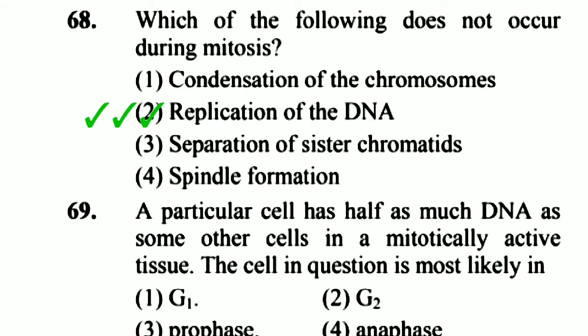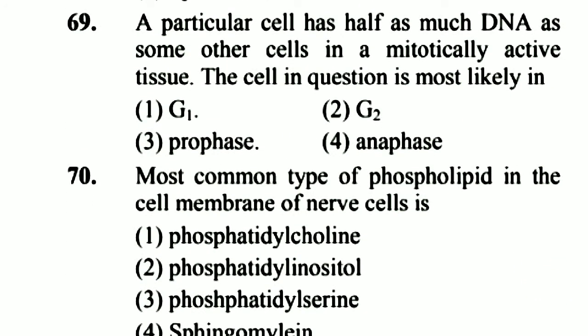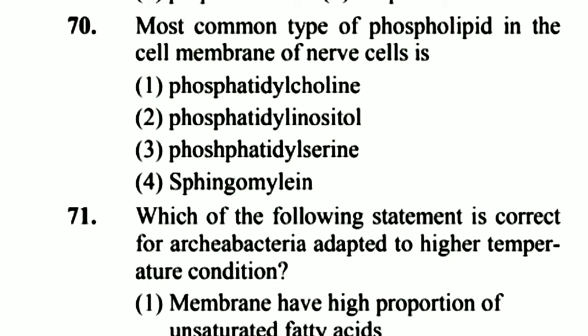Question 69: A particular cell has half as much DNA as some other cells in a mitotically active tissue. The cell in question is most likely in G1 phase. Option 1 is right.